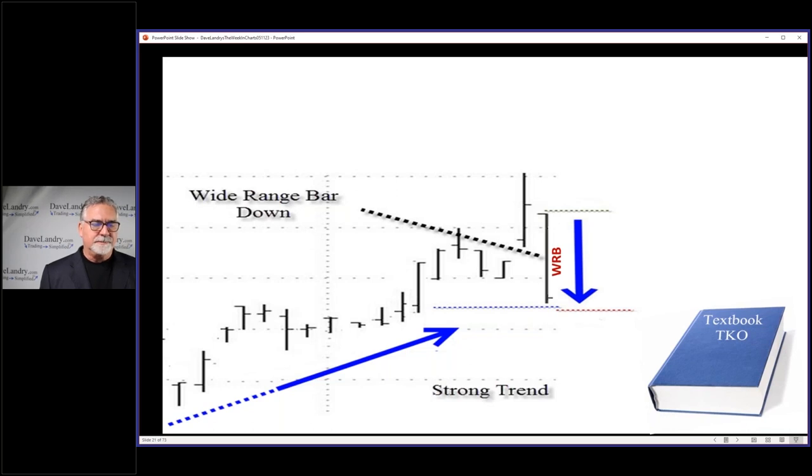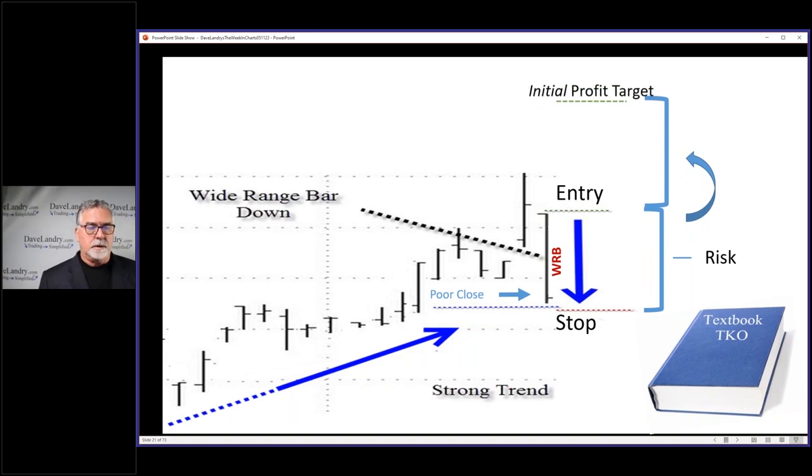If you get a textbook TKO where you close near the bottom of the range, you got a wide range bar, then you can put your entry just above the high. A lot of times you can put your stop right below the low, and the beauty of that is if you have the entry and the stop, then you know what your initial profit target is going to be.